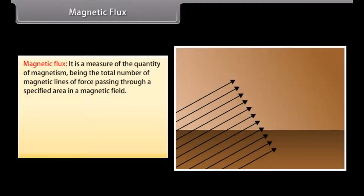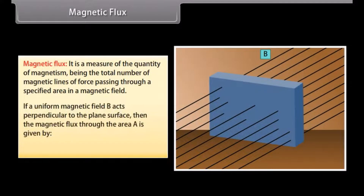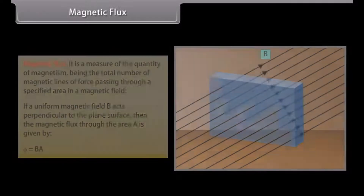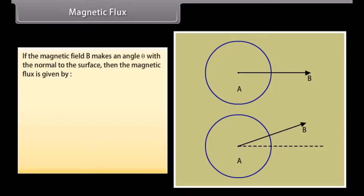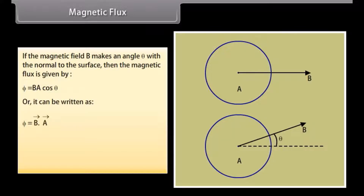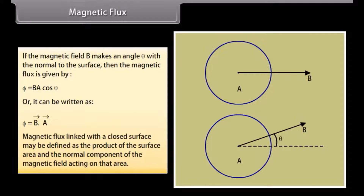Magnetic flux is a measure of the quantity of magnetism — the total number of magnetic lines of force passing through a specified area in a magnetic field. If a uniform magnetic field B acts perpendicular to the plane surface, then the magnetic flux through area A is given by the product of B and A. If the magnetic field B makes an angle theta with the normal to the surface, then the magnetic flux is given by B·A·cos(theta), or Phi = B⃗·A⃗. Magnetic flux linked with a closed surface is the product of the surface area and the normal component of the magnetic field acting on that area.